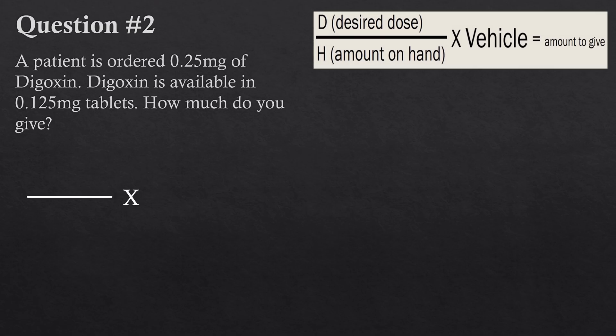Question two: a patient has been ordered 0.25 milligrams of digoxin. Digoxin is available in 0.125 milligram tablets — how much do you give? Just because you have more decimals here doesn't mean you change anything with the formula — you have to do it the exact same way. The desired dose is what's ordered, so 0.25 milligrams goes on top.